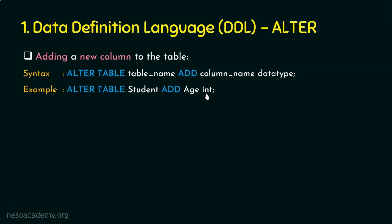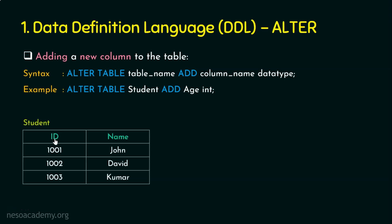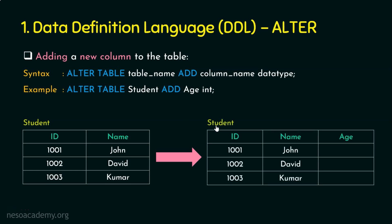SQL queries read like English statements — that's one of the fascinating features of SQL and why it's easy to learn. 'ALTER TABLE student ADD age INTEGER' means we are altering the existing table 'student' by adding a new column 'age' with data type INTEGER. If the table had only two columns — id and name — after executing this command, the table now has three columns: id, name, and age.